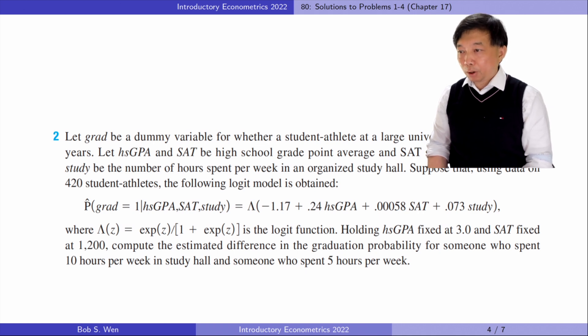Holding high school GPA fixed at 3.0 and SAT fixed at 1200, compute the estimated difference in the graduation probability for someone who spent 10 hours per week in study hall and someone who spent 5 hours per week.